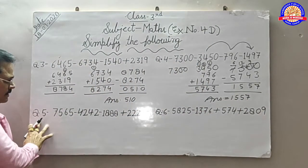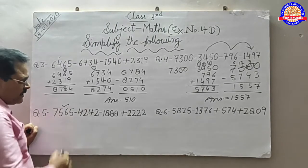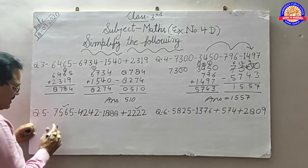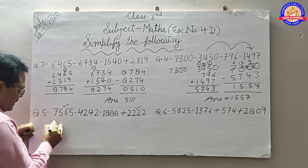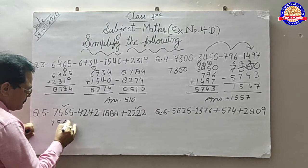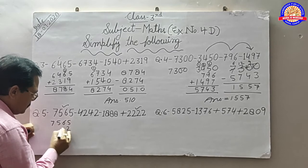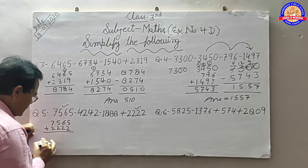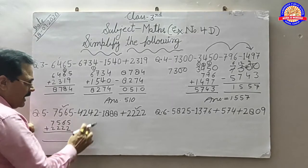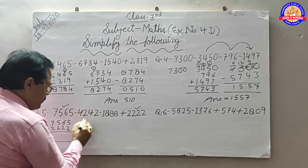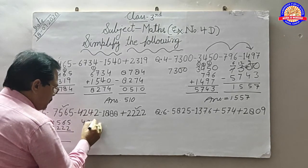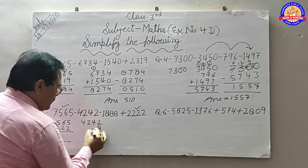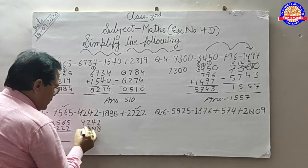Question number 5. यह first number लिखेंगे. इसके बाद यह है. इन दोनों को पहले plus करेंगे: 7, 5, 6, 5, 2, 2. यह plus. अब यह दो minus हैं, इनको भी copy करेंगे: 4, 2, 4, 2, 8, 8, 1.